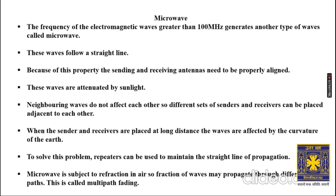Different sets of senders and receivers can be placed adjacent to each other when using microwaves. When sender and receiver are placed at long distances, the waves are affected by the curvature of the Earth. Since microwaves travel in a straight line, repeaters are used to solve this problem and maintain the straight line of propagation. If Earth is curved and two antennas are far apart, repeaters are placed in between.